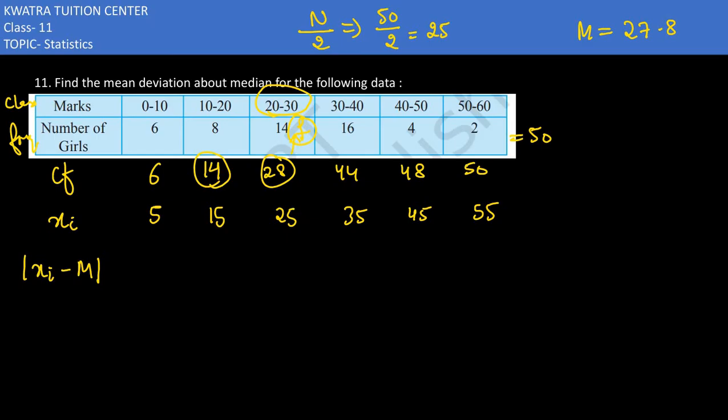|xi minus median|: 5 minus 27.8, that is 22.8. Next, 15 minus 27.8, that is 12.8. 25 minus 27.8, this is 2.8. 35 minus 27.8, that is 7.2. Then 45 minus 27.8, that is 17.2. 55 minus 27.8, that is 27.2.